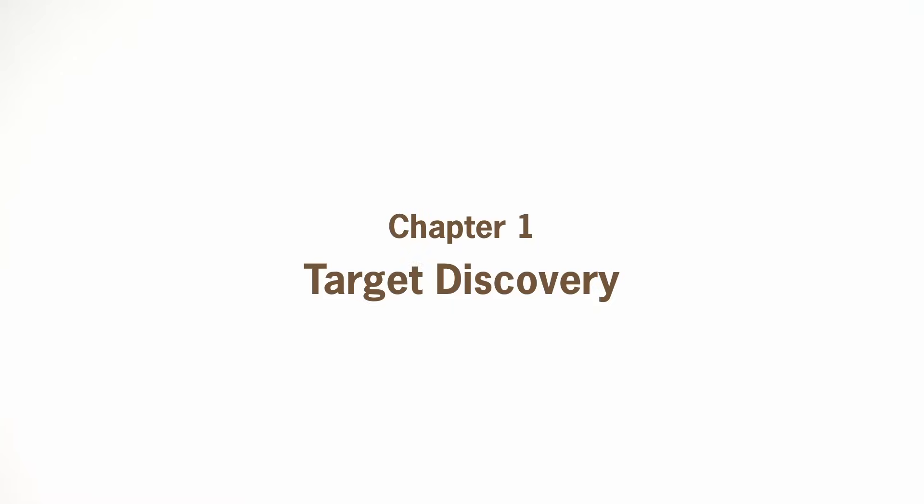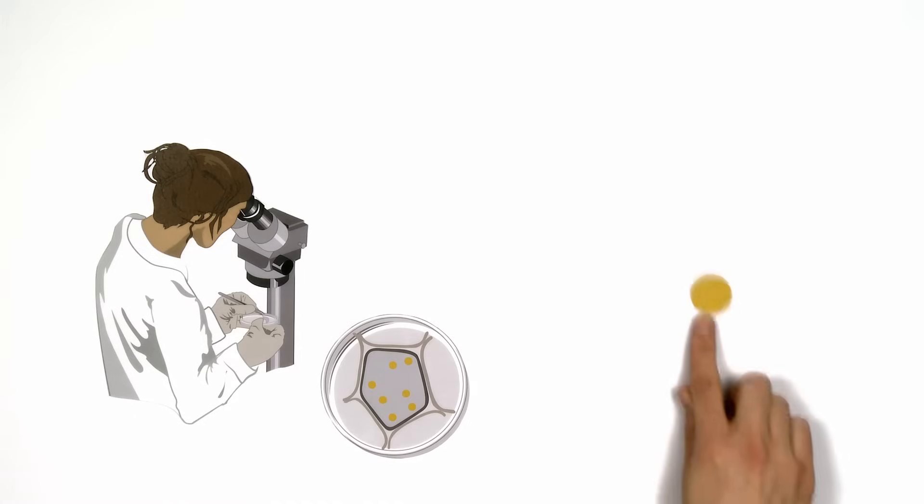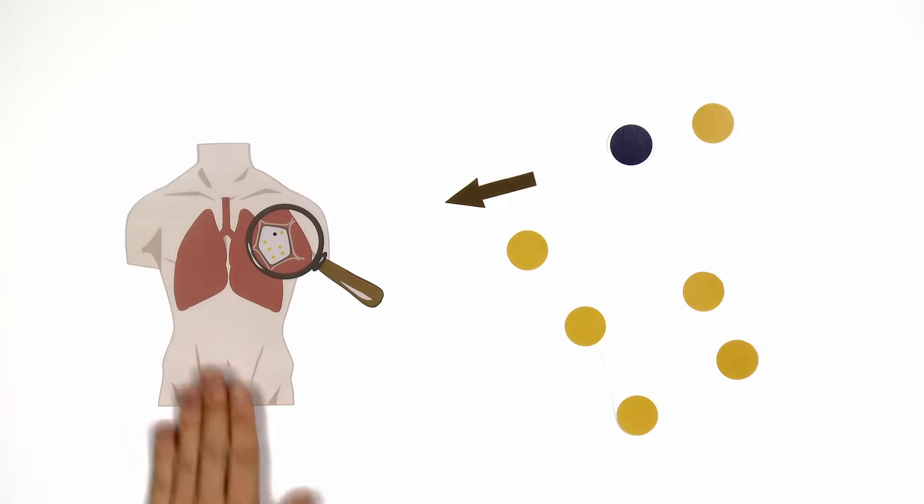The first step in drug development is to discover the best targets for treating or preventing a disease. Targets are usually proteins in the patient's body, which are associated with a disease, or proteins in microorganisms causing a disease. The challenge is to identify which proteins are relevant and, more importantly, confirm their role in a disease.